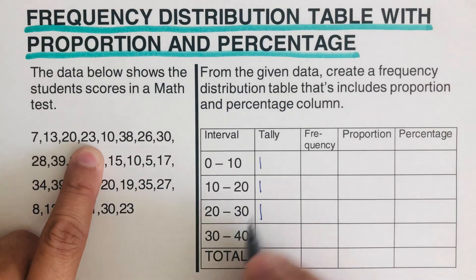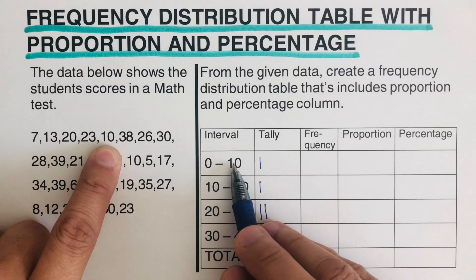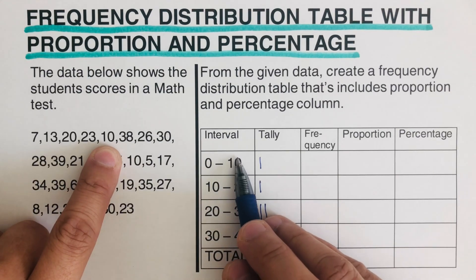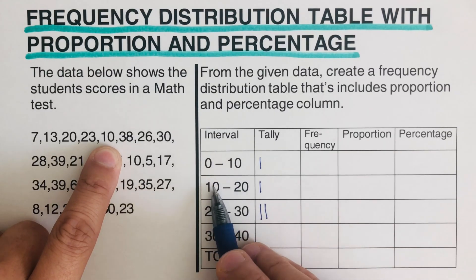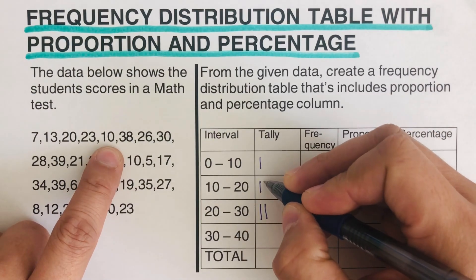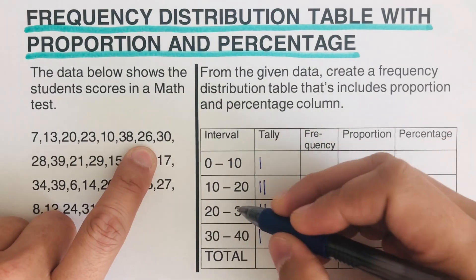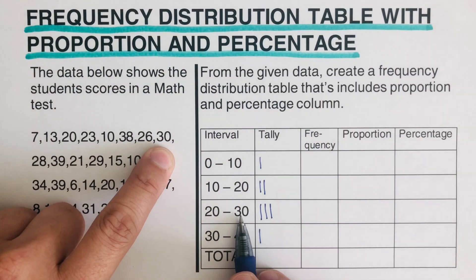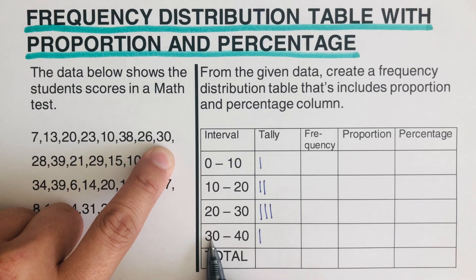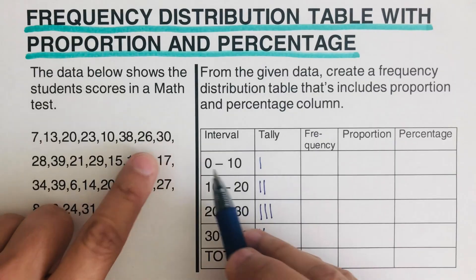23 is between 20 and 30, so I'll tally that there. For 10 — remember this boundary is 9.99999, not included, while this 10 is the included boundary — so this 10 goes to the 10–20 row. 38 is between 30 and 40. 26 is between 20 and 30. And 30 — just a reminder, this boundary is 29.999 and is not included, so this 30 goes to the 30–40 row. I'll tally the rest.